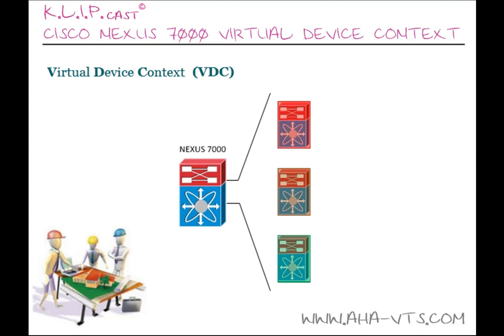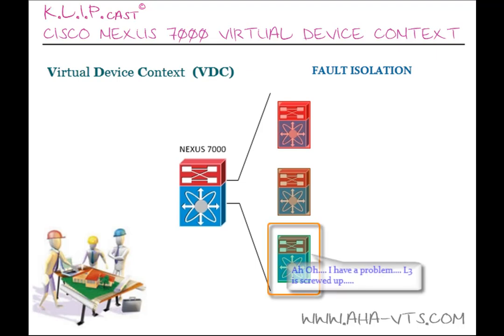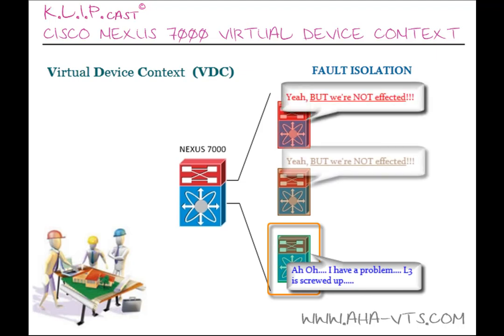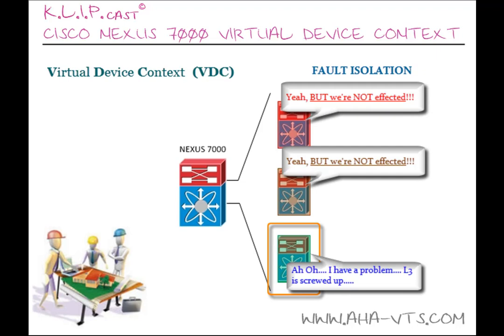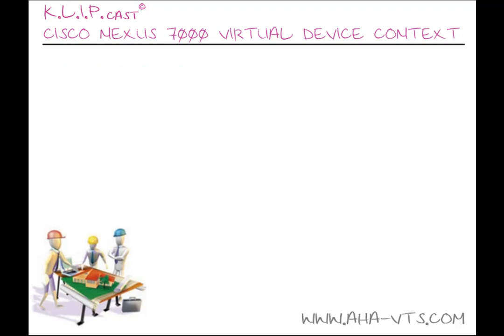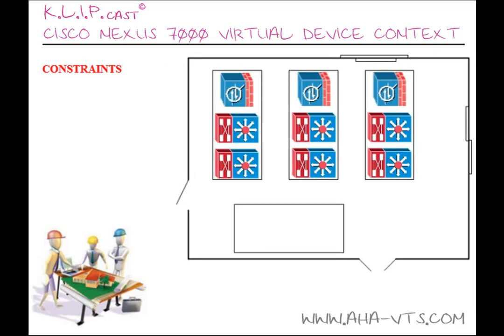The VDC provides something no other chassis can provide: fault isolation. Meaning, if a fault occurs — say a routing failure, a layer 2 loop, or a black hole — no other environment is affected. It's only isolated to that one VDC. This is unlike a single chassis, where a failure of any kind would affect the entire chassis.